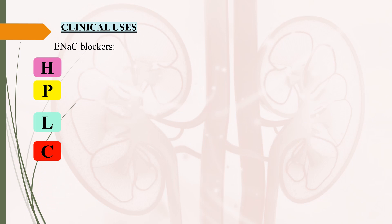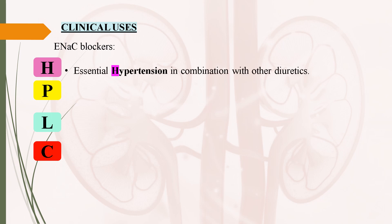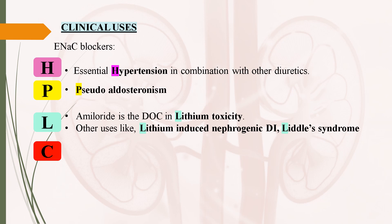Coming to clinical uses of epithelial sodium channel blockers: you can remember these uses with the mnemonic HPLC, where H stands for hypertension, P stands for pseudoaldosteronism, L stands for lithium toxicity, lithium-induced nephrogenic diabetes insipidus, and Liddle syndrome, and C stands for cystic fibrosis. In case of essential hypertension, these drugs are given in combination with thiazide and loop diuretics to reduce hypokalemia. In case of pseudoaldosteronism, triamterene is used to reduce hypertension and hypokalemia.